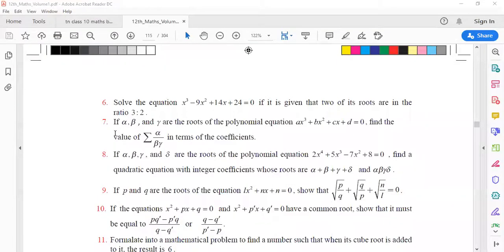Question 7: If alpha, beta and gamma are the roots of the polynomial equation ax³ + bx² + cx + d equal to 0, then find the value of sigma alpha by beta gamma in terms of coefficients.